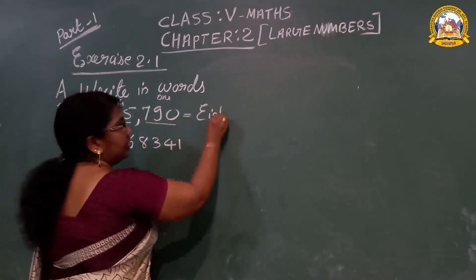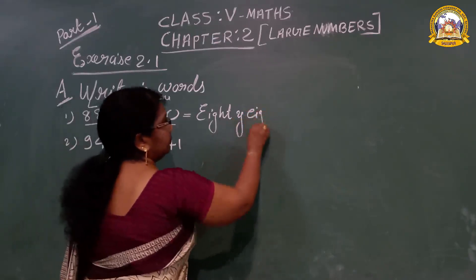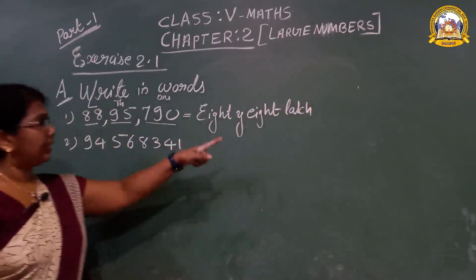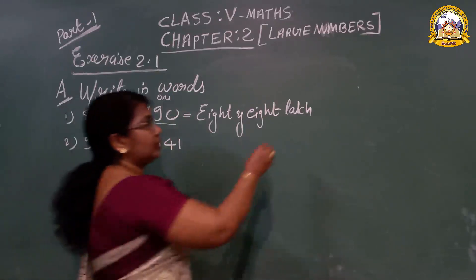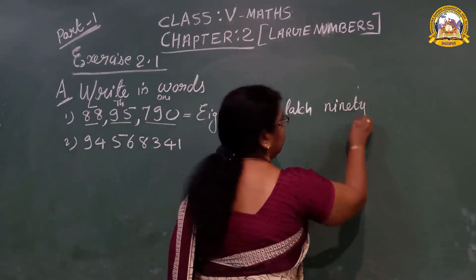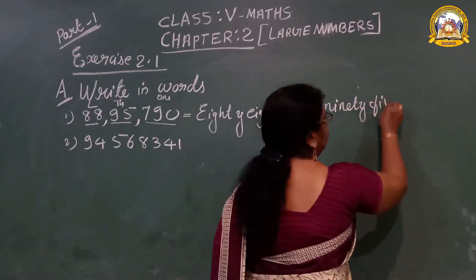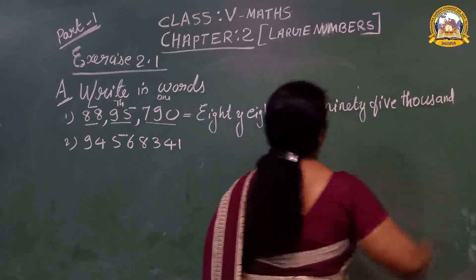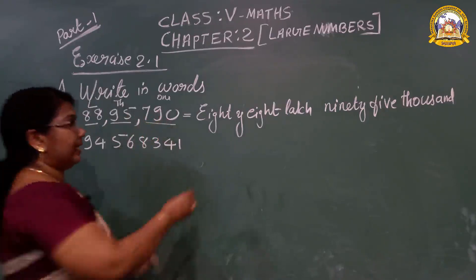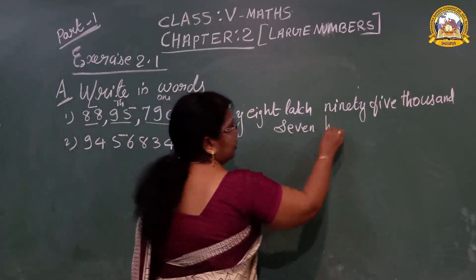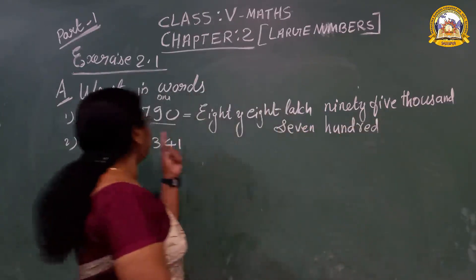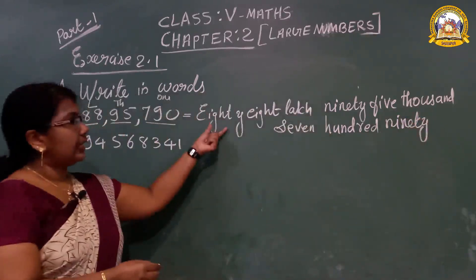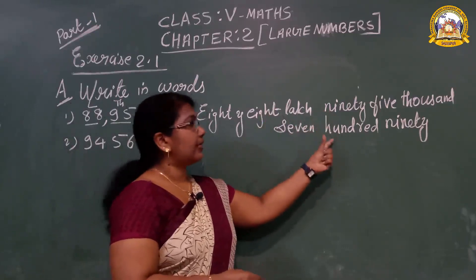Eighty-eight lakh. What is the spelling of lakh? L-A-K-H. Eighty-eight lakh. Ninety-five thousand — ninety spelling: N-I-N-E-T-Y. Ninety-five thousand — spelling of thousand: T-H-O-U-S-A-N-D. Seven hundred — H-U-N-D-R-E-D. Seven hundred ninety — N-I-N-E-T-Y. So the answer: eighty-eight lakh, ninety-five thousand, seven hundred ninety.